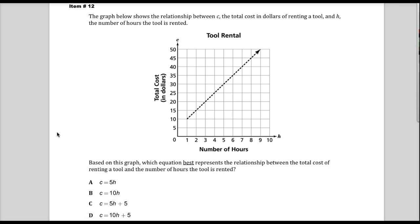I would assume that this isn't like they're renting a hammer. They're renting something big, like one of those front-end loaders or a stump buster, something they have to order, or a concrete mixer, something big. Although based on the prices they're giving me, maybe not. Anyway, based on this graph, which equation best represents the relationship between the total cost of renting a tool and the number of hours the tool is rented?